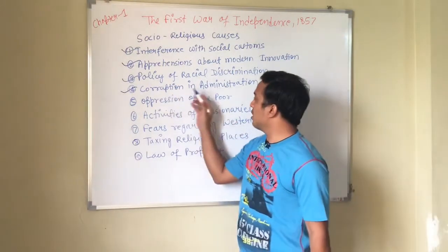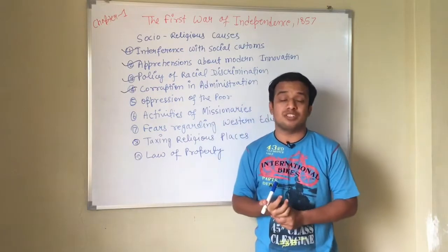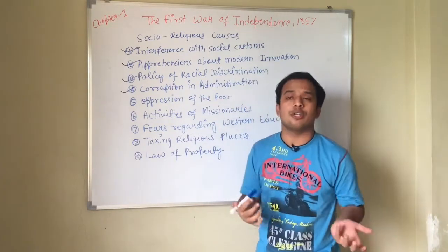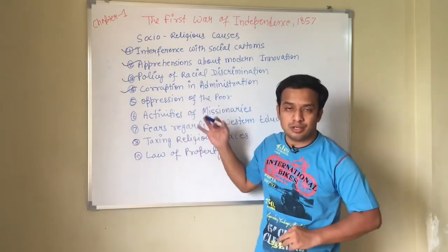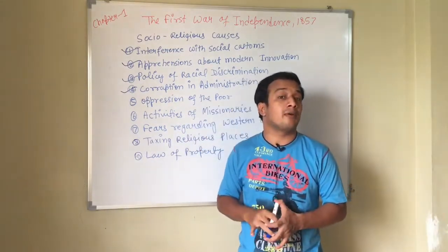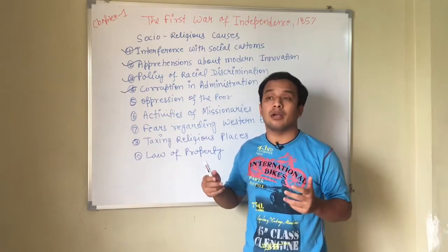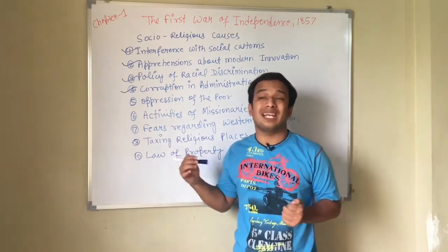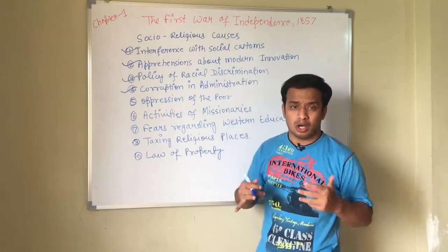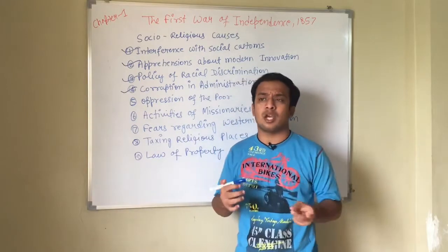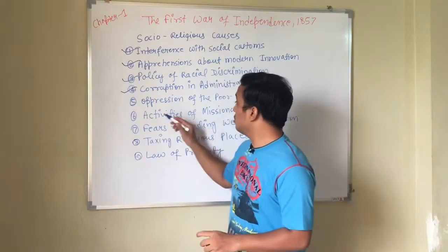Next is corruption in administration. There was corruption in the administration. The police as well as officials who helped in administration were corrupt. For doing any work, they demanded bribery — money ki demand karte the. As a result, the lower section of the people and common man were greatly affected.